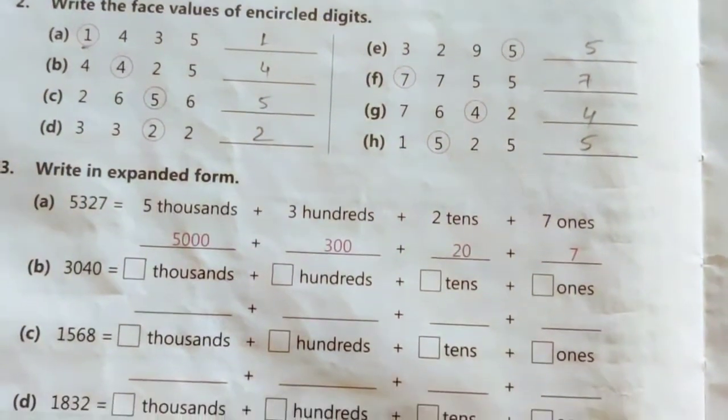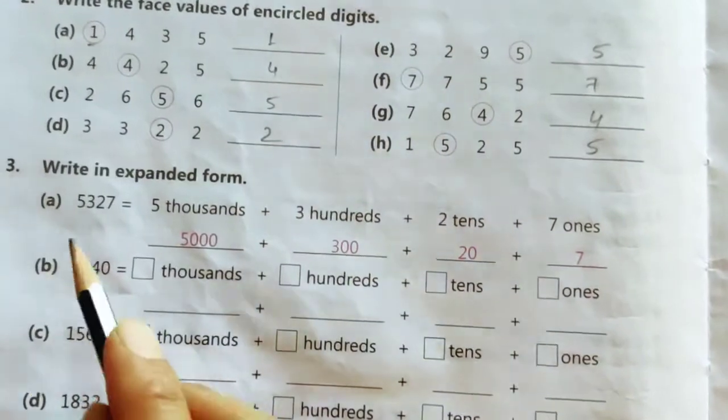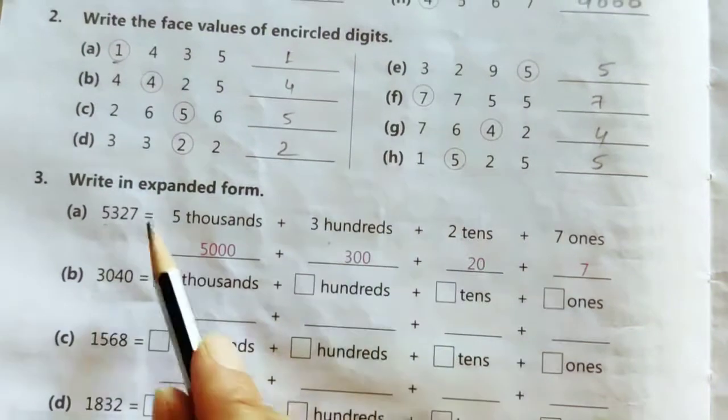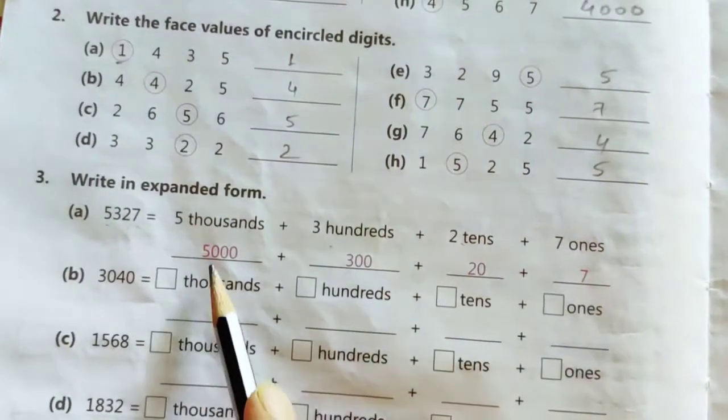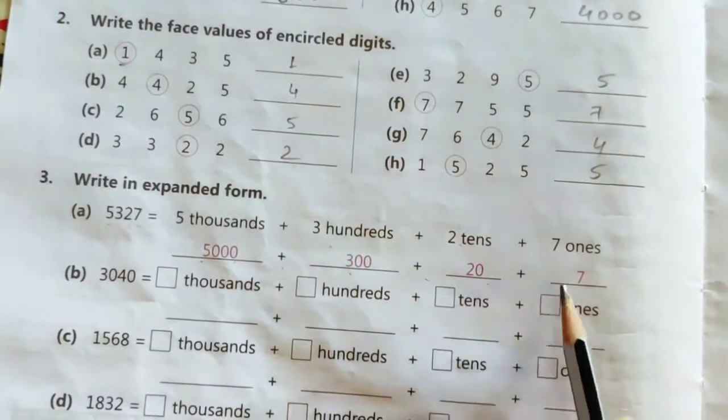Now question number 3. Write the expanded form. Expanded form means long form. For example, 5,000, 3 hundred, 2 tens, and 7 ones. So we can write this also, 5,000 plus 300 plus 20 plus 7.